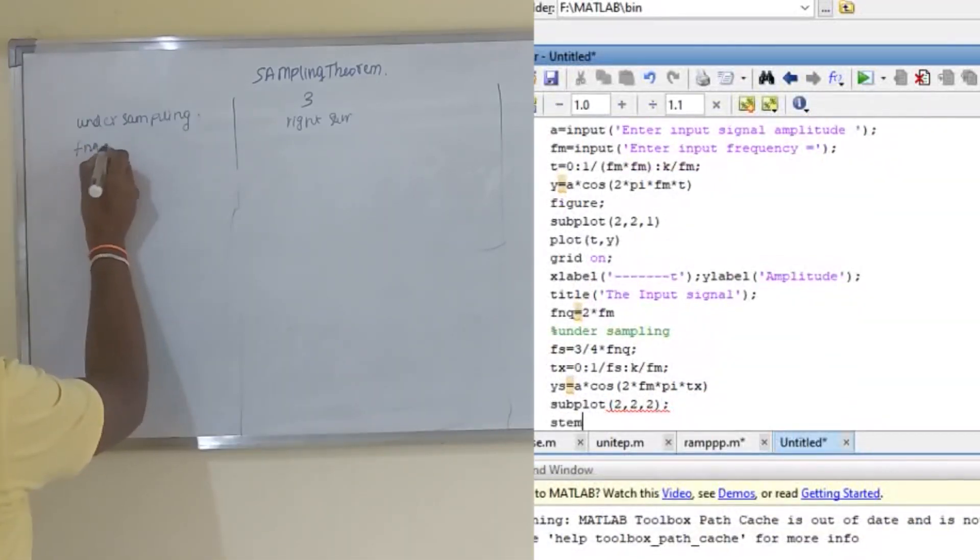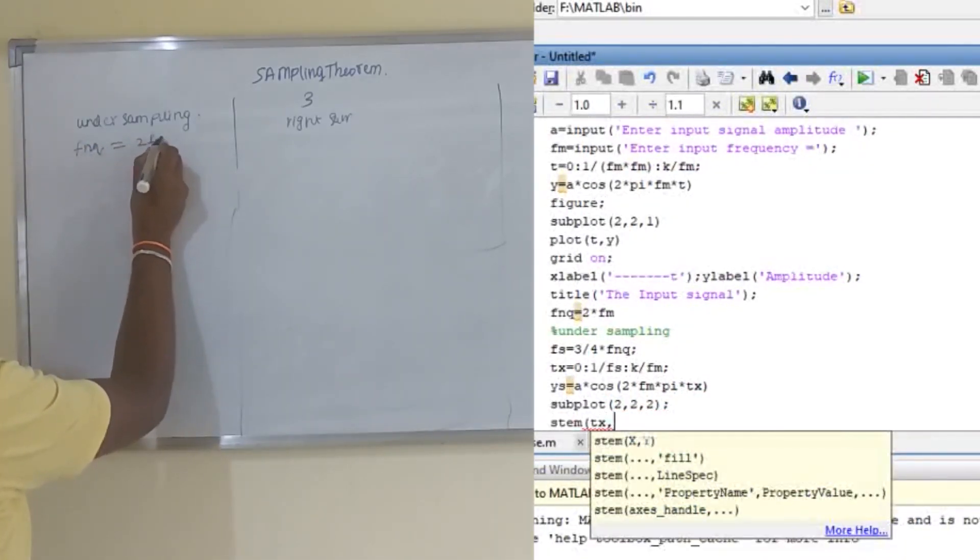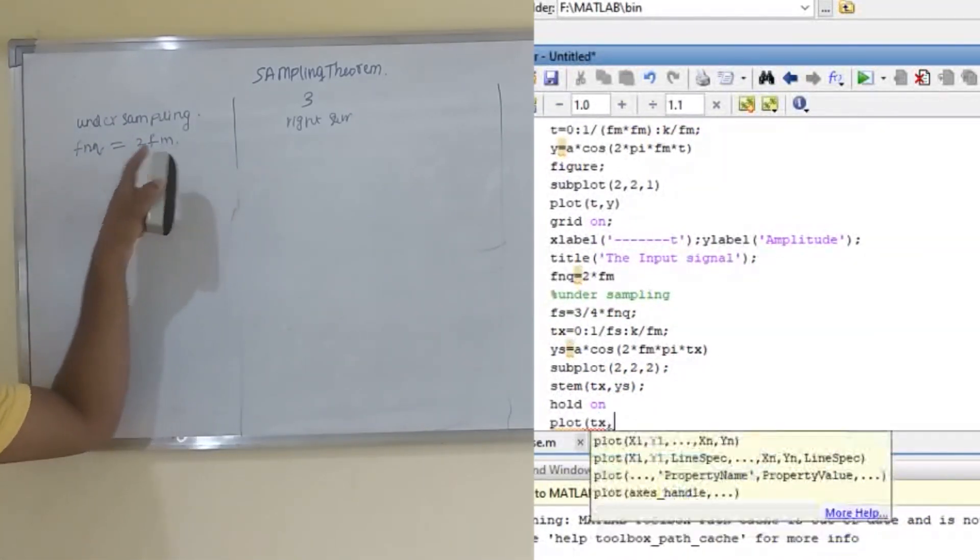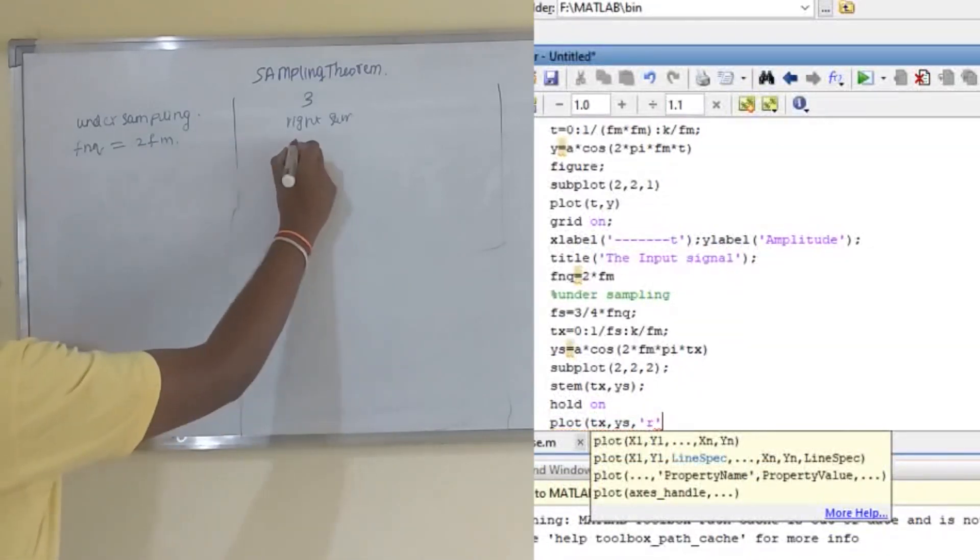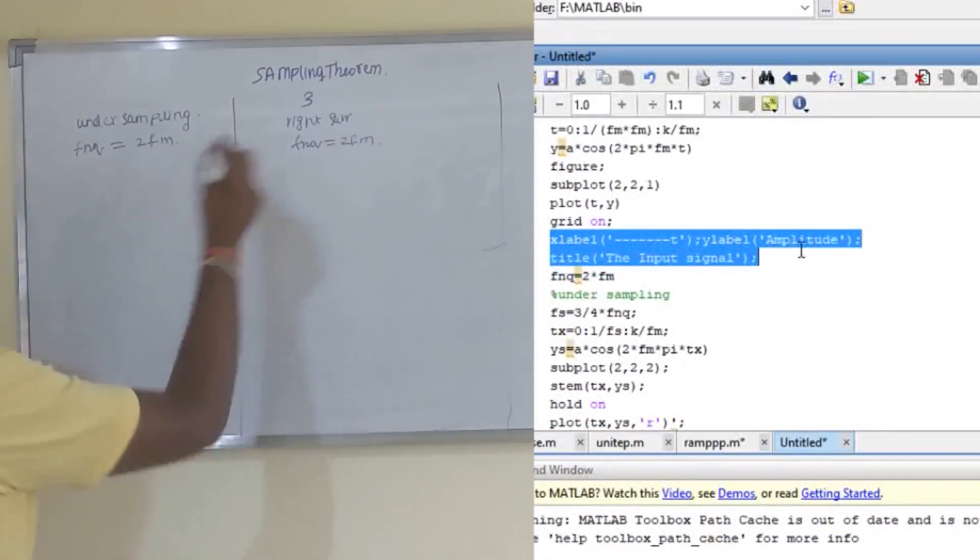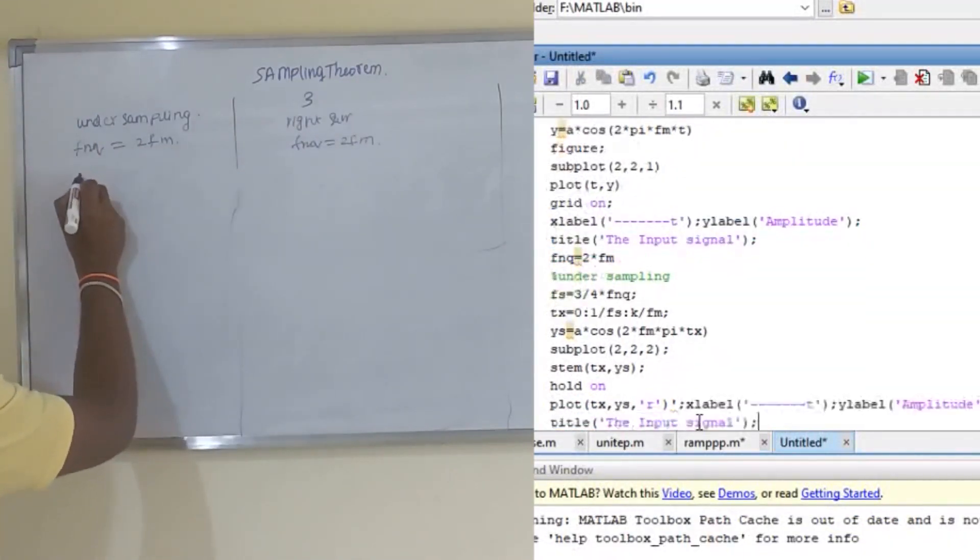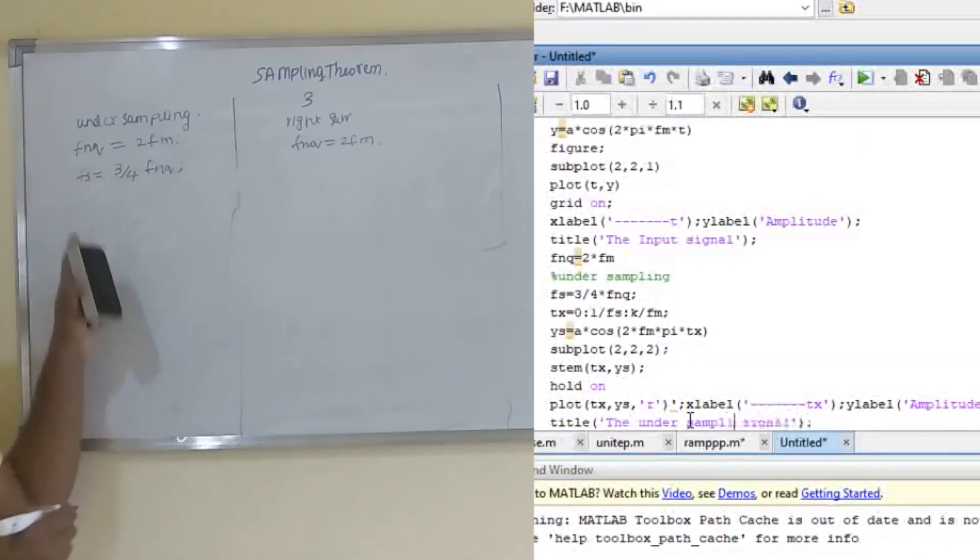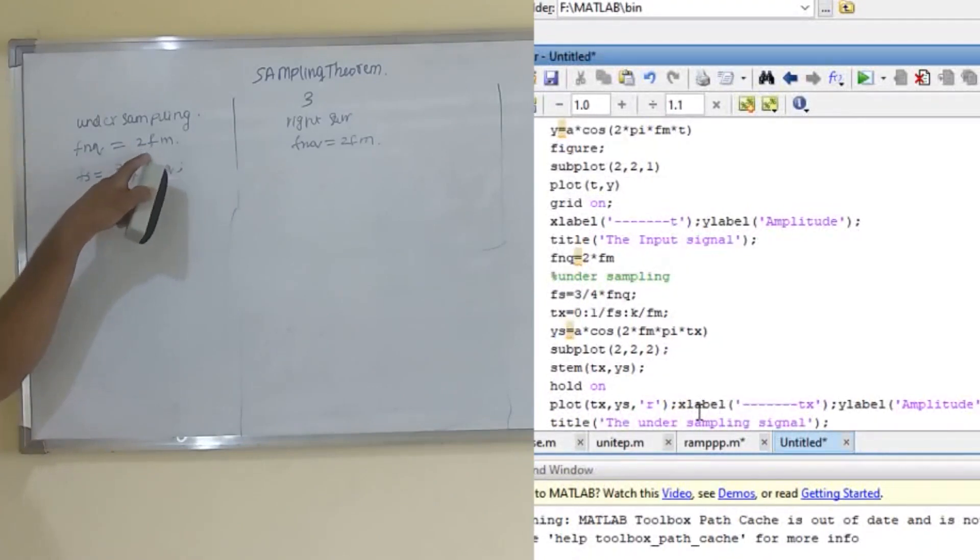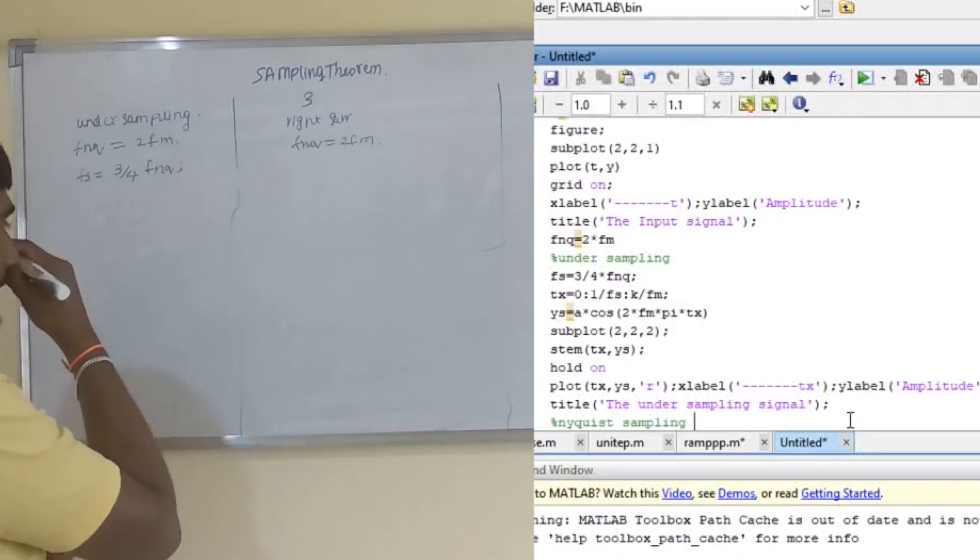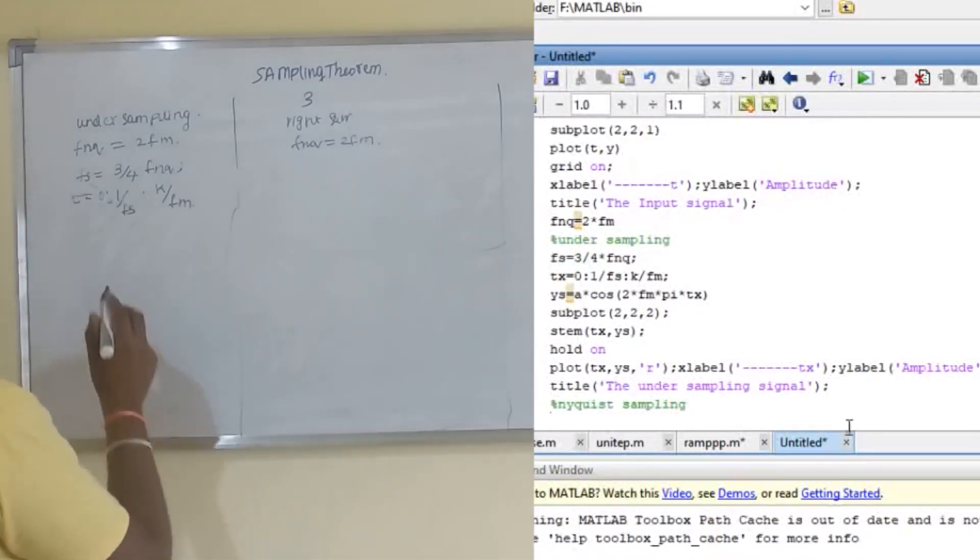I will define a new variable Fnq equal to 2 times Fm. We will define Fnq as 2Fm, which is the right sampling criteria. Here also we will define Fnq equal to 2Fm. This is the right sampling criteria. I will choose another sampling frequency which will be 3 by 4th of Fnq, which means this is less than 2Fm.